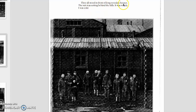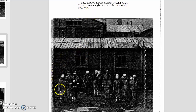They all stood in front of long wooden houses. The sun was setting behind the hills. It was windy. Now it was cold. And because this is a picture book, you will also use text evidence from the visual here. So go ahead, stop and think: what clues is the author giving us that suggest the type of place this is, and what mood is the author creating?